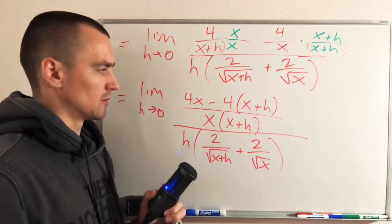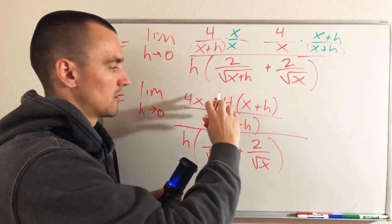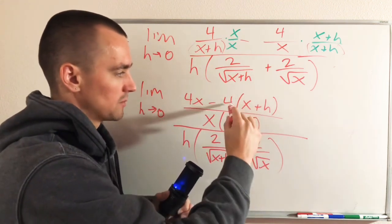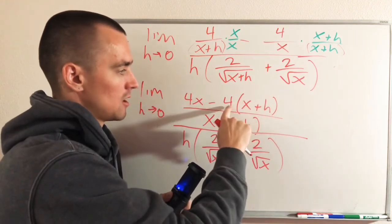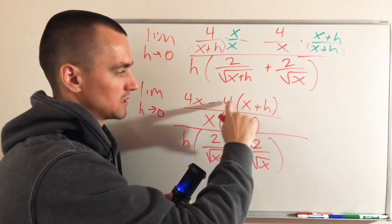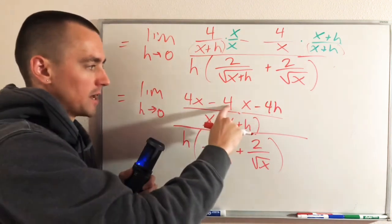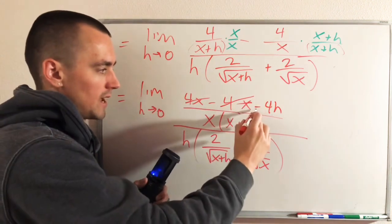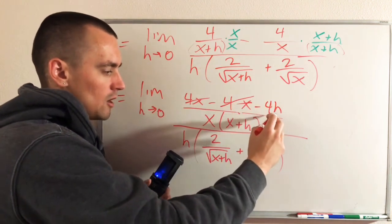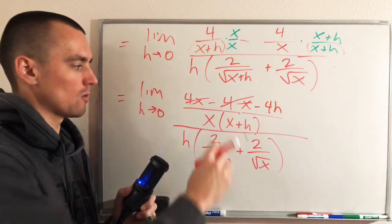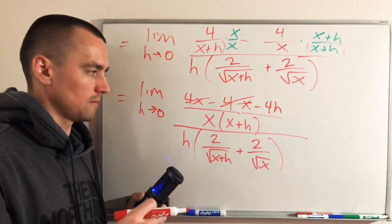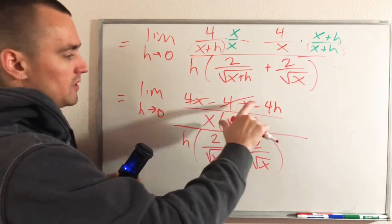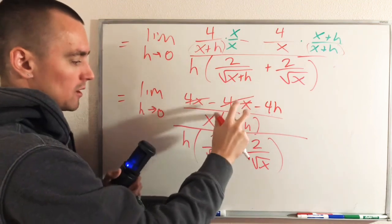So this is now just the numerator of our fraction — we still need to keep the whole denominator as is. Now we can continue working just in our numerator and simplify this out a bit. We have this 4 that could be distributed to both the x and the h. So doing that will give us 4x and then minus 4h. And now you can see we have a 4x minus a 4x — these are actually going to cancel out. So our numerator only has a negative 4h.